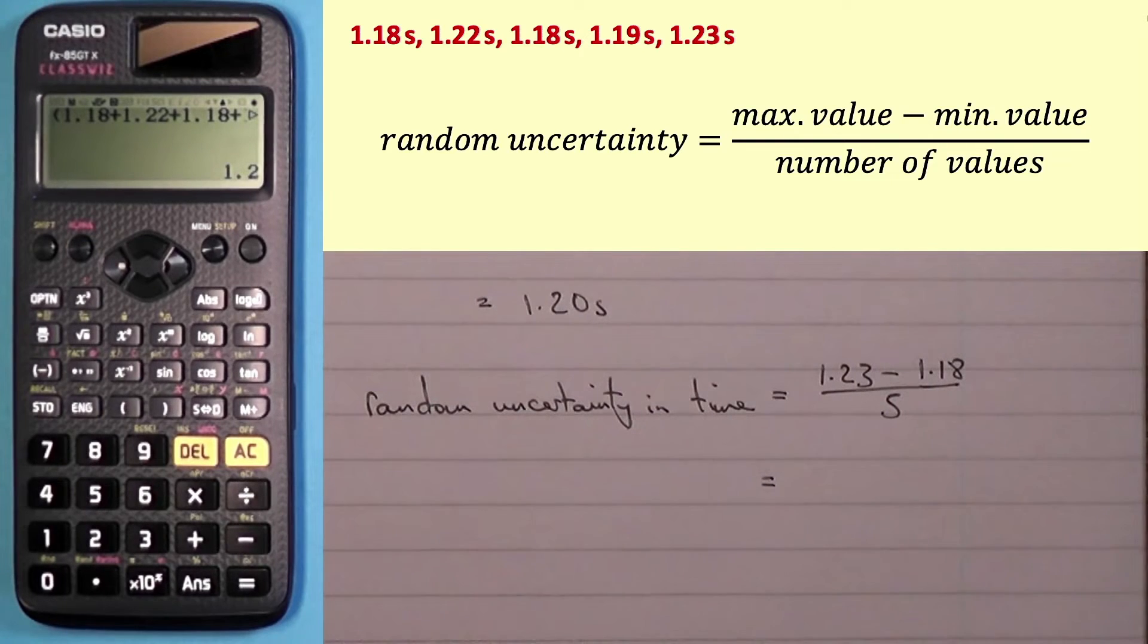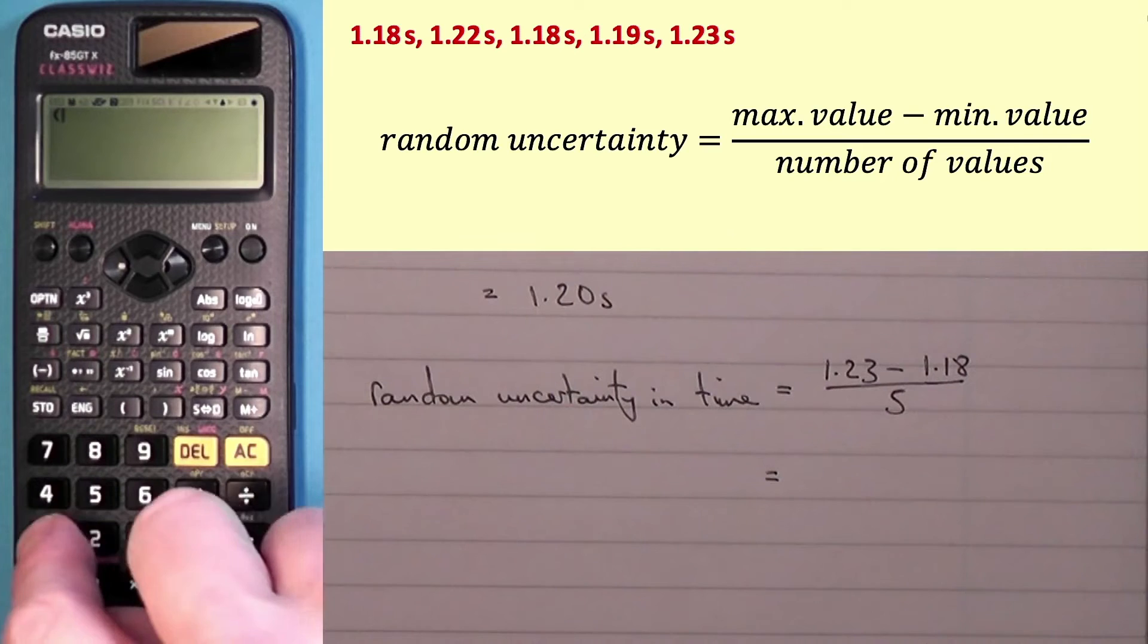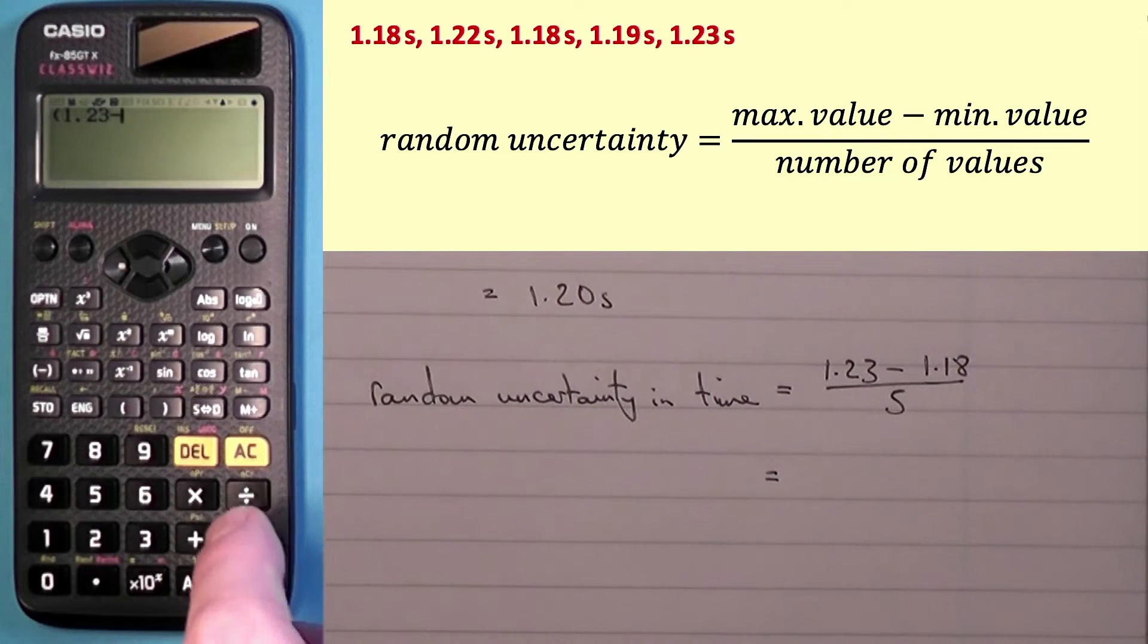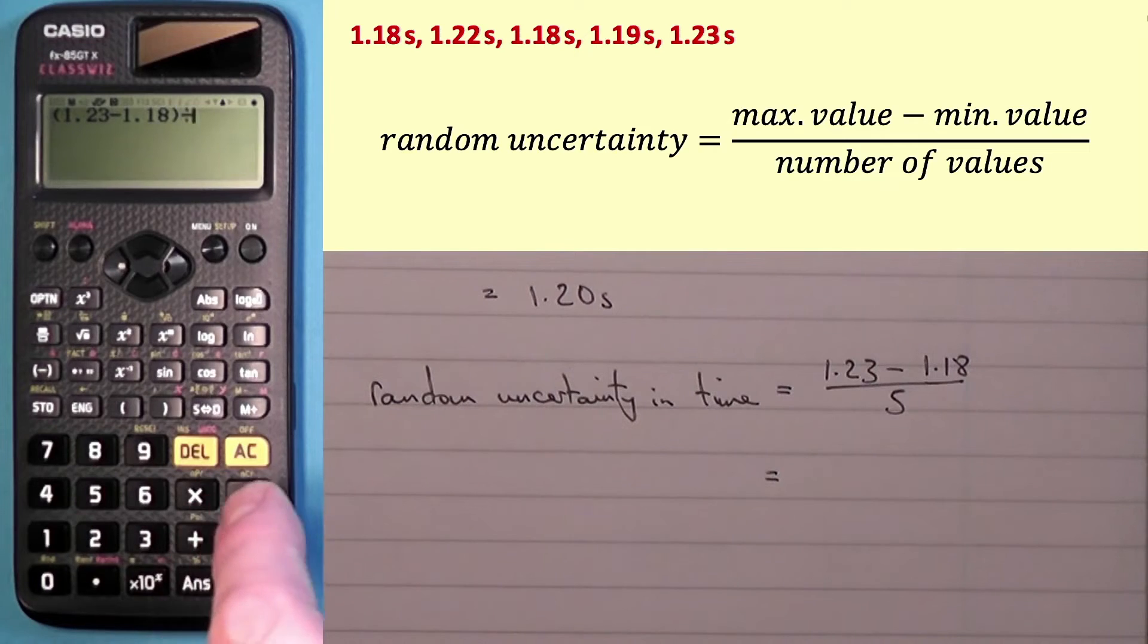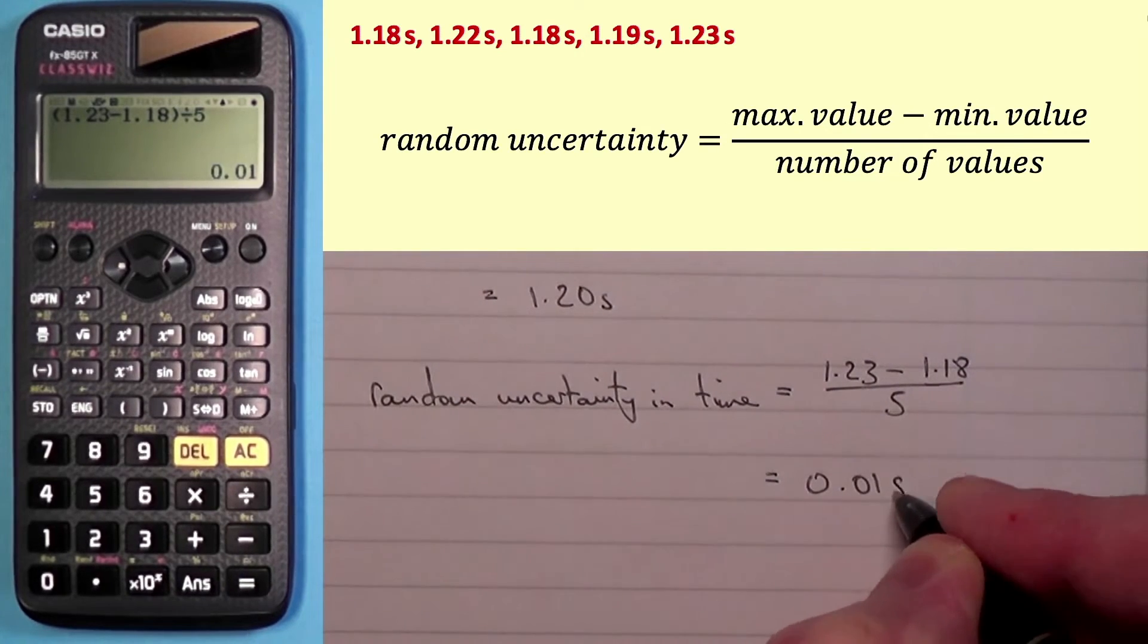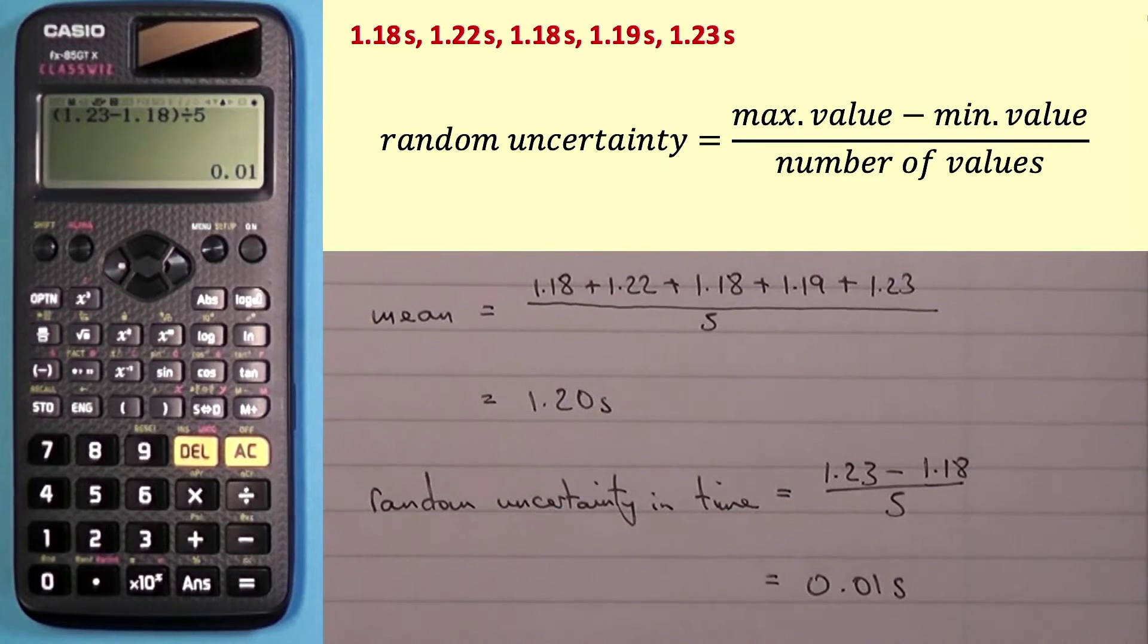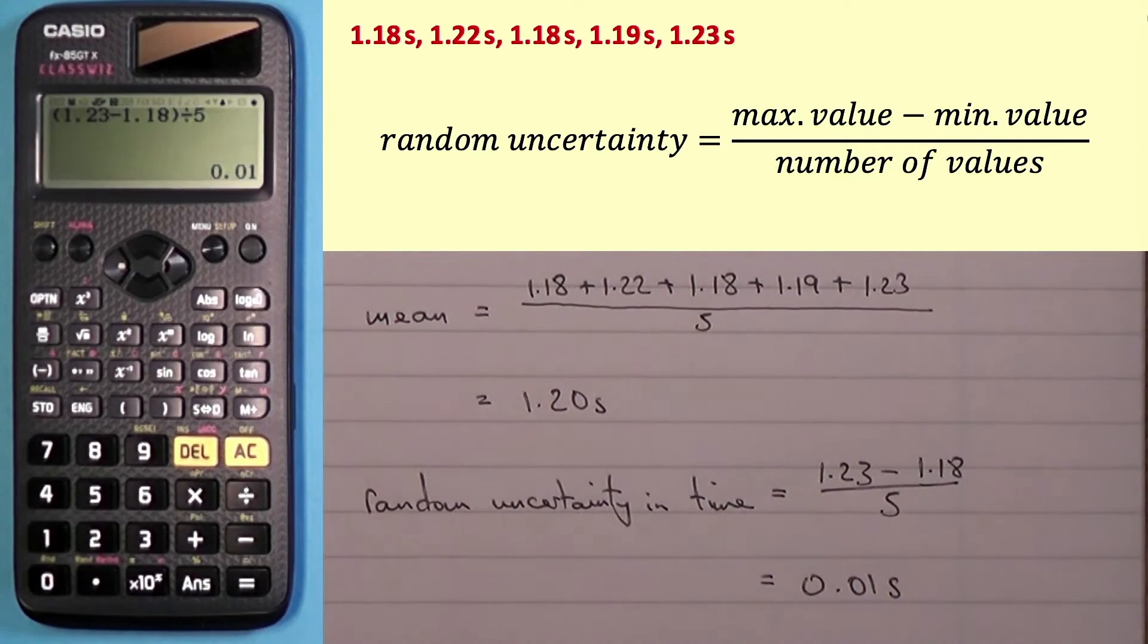1.18 is the smallest value and of course we've had five different values. So that means that the random uncertainty in time is going to be, and again I'm going to place the top line in brackets, 1.23 minus 1.18 divided by five, which is, press the SD button, 0.01 seconds. So can I get all of that in? Yes, I can. That basically answers both parts of the question. So this is the mean value, 1.20 seconds, and this is the random uncertainty in time 0.01.